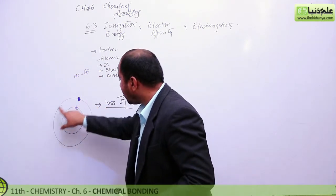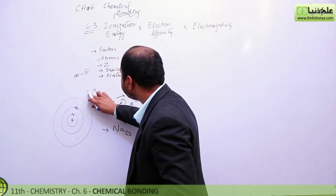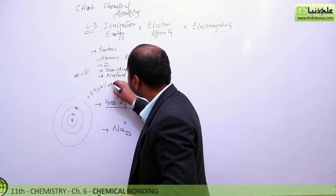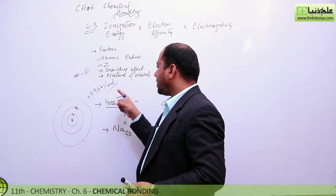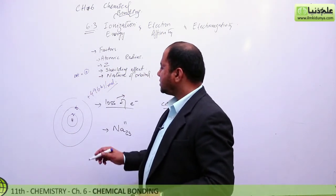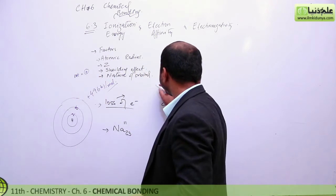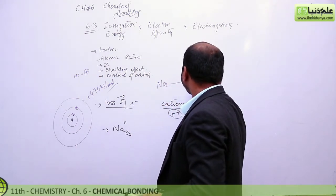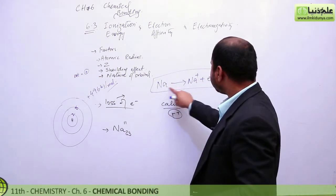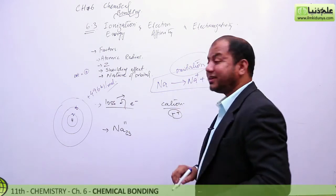So enthalpy is positive. To take this electron out, we need 496 kilojoules of energy per mole. That means to remove an electron from one mole of sodium atoms, 496 kJ of energy is needed. When the electron is removed, sodium becomes a cation — a positively charged ion. Removing an electron is also called oxidation.